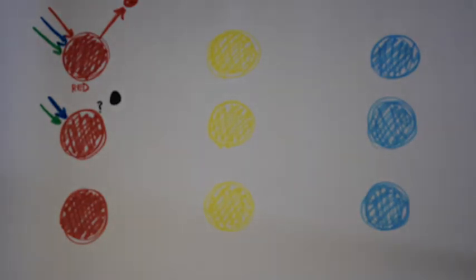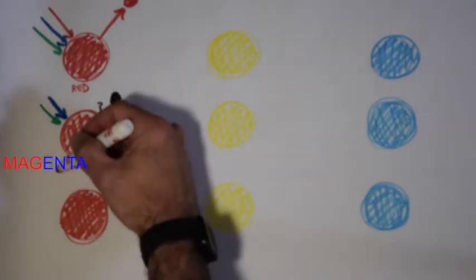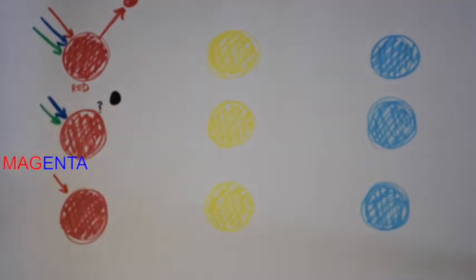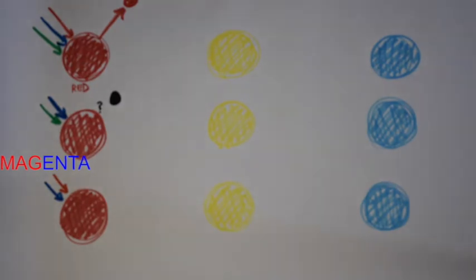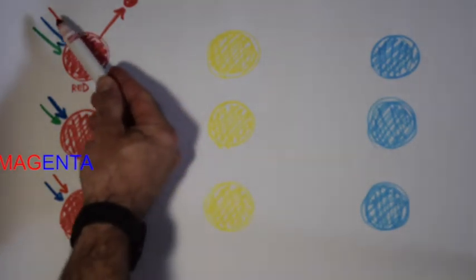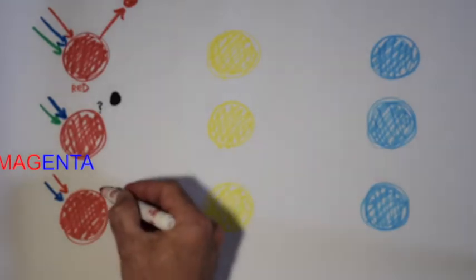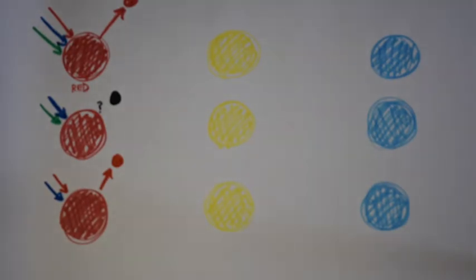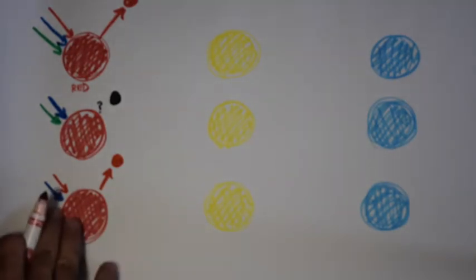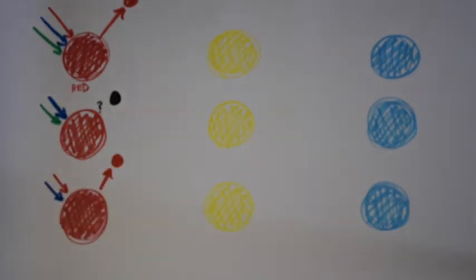What if we shine magenta light on a red surface? Magenta light is a combination of red light and blue light. We shine magenta light on that red surface, and the same thing happens — the reason we call it a red surface is because it reflects red, and so we will see it as red. The blue part of the magenta light gets absorbed.